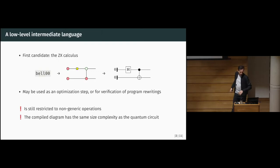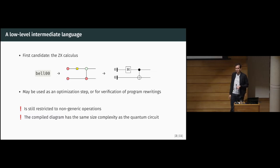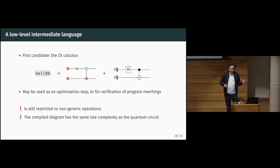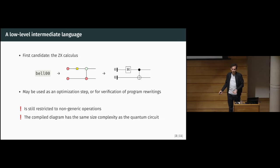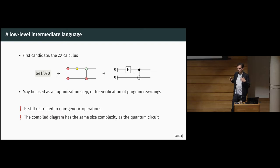As a first step, we note that the ZX calculus looks like a really nice language for some intermediate representation. So we can translate directly from Proto-Quipper-D programs that have been instantiated — where we know all the parameters — and instead of generating a quantum circuit, we generate a ZX diagram. Then we may be able to do some optimization there, verify some programs, and then go into a quantum circuit. The problem is that we don't really win anything doing that, since having this ZX representation is equivalent to having the quantum circuit representation and will have the same size in number of nodes.